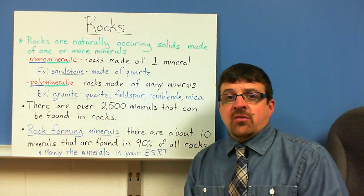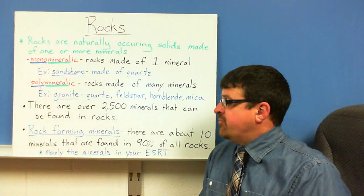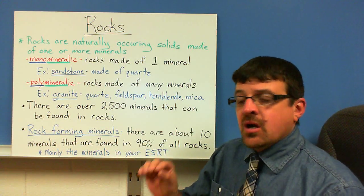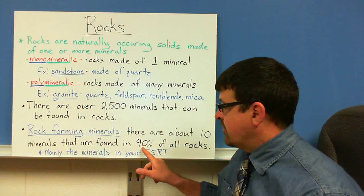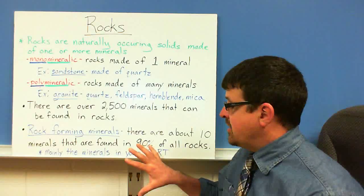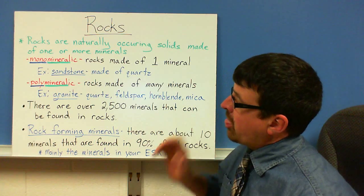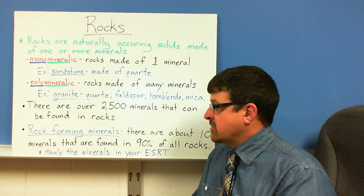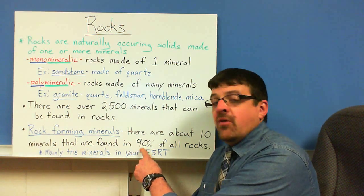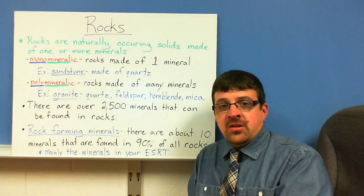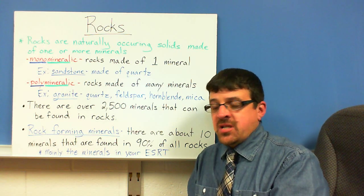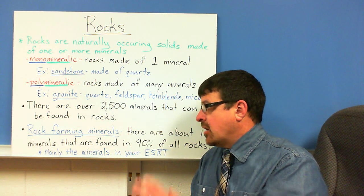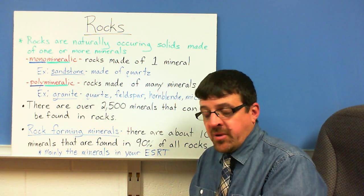Now, there are over 2,500 minerals found in rocks. The rock-forming minerals are the minerals found in 90% of all rocks. These are mainly the minerals on the back of your reference table — those 20 on the back of your ESRT are a majority of those rock-forming minerals.